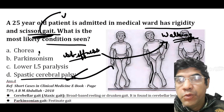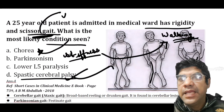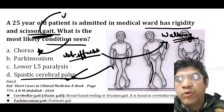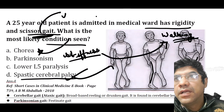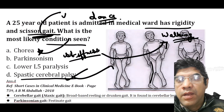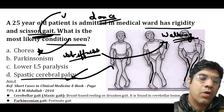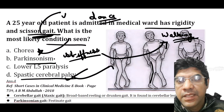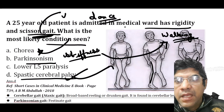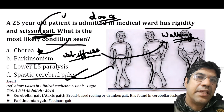Other options include chorea — a movement disorder characterized by involuntary, rapid, jerky, and unpredictable movements of the limbs or face, associated with conditions like Huntington's chorea. Parkinsonism refers to a group of neurological disorders with features of tremors, slowing of movements, and rigidity. The answer is D — spastic cerebral palsy.